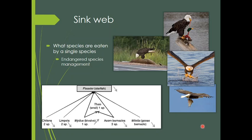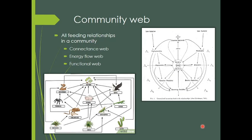Most people, when they think about a food web, think about a community web — the classic diagram with plants on the bottom, then herbivores, then carnivores, and top carnivores, with decomposers like bacteria also shown. This represents all the feeding relationships among everything in the ecosystem. There are three different ways to depict community webs: connectance webs, energy flow webs, and functional webs — each with different purposes.